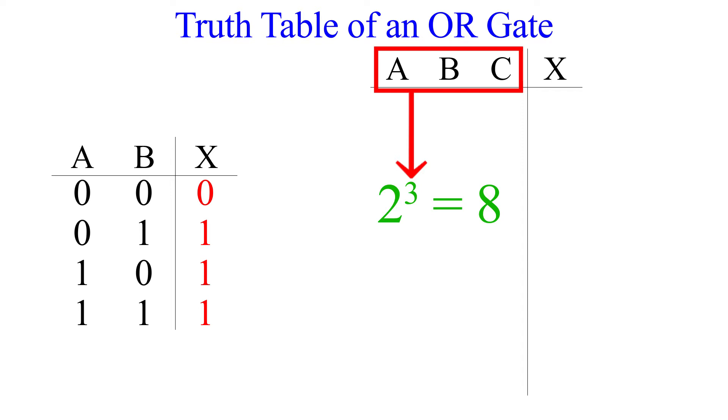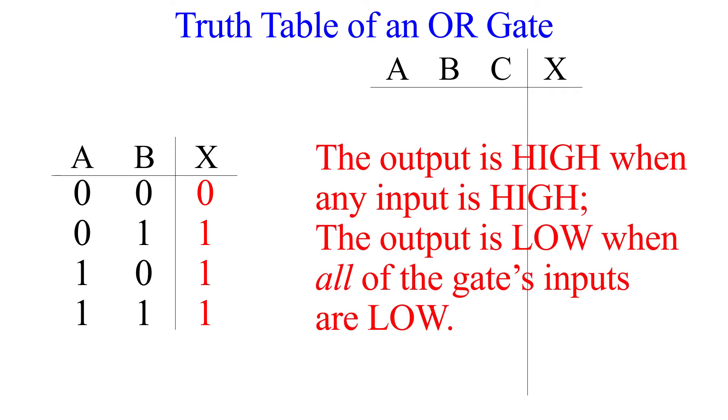As I covered in the AND gate video, this rule applies to any logic gate. Okay, so the rule for the OR gate is, the output is high when any input is high. The output is low when all of the gate's inputs are low. With this in mind, pause the video and try to make the truth table on your own.